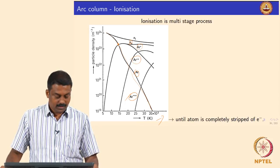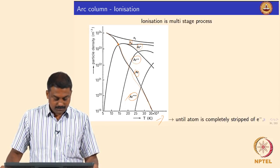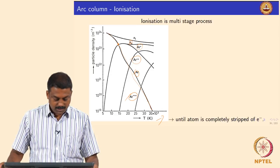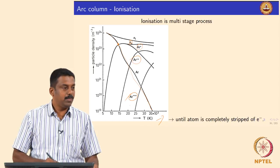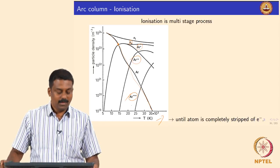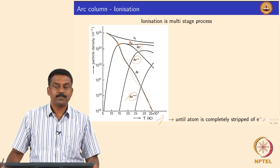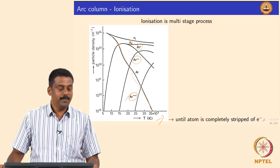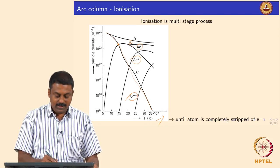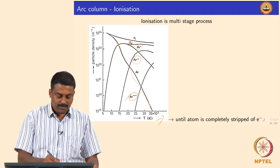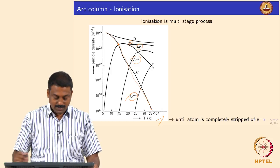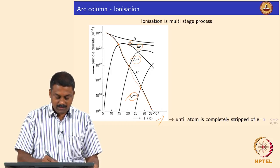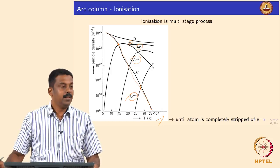Question: why does increasing temperature decrease the particle density in the case of argon? Because argon is converted into Ar+, Ar2+, Ar3+. This is the neutral argon atom density decreasing. Electron density is increasing, and at a certain temperature argon+ goes down because you start creating Ar2+; then that also comes down because you start creating Ar3+.